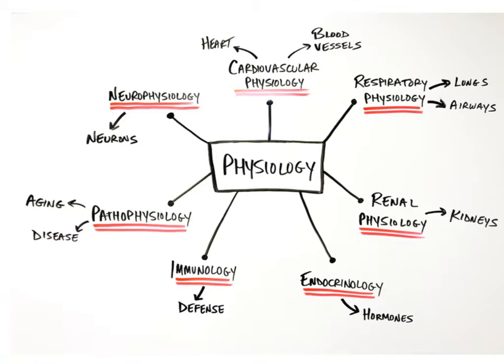Respiratory physiology is the study of the lungs and the airways, including the trachea, or windpipe, and the bronchioles, which lead into the lungs. Renal physiology is the study of the functions of the kidneys. Anything with the word renal associated with it has something to do with the kidneys. Endocrinology is the study of hormones, one of the major groups of chemical messengers in the body that help control body functions, such as growth and development.